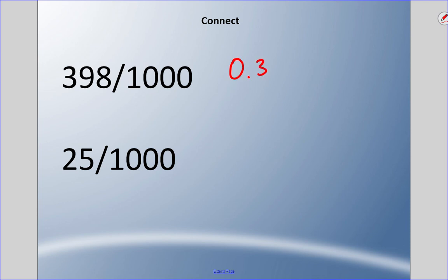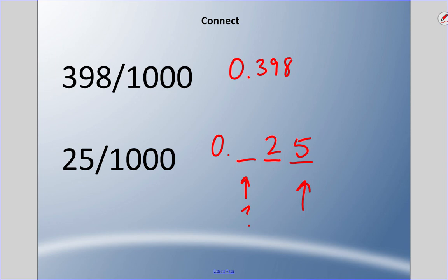The second fraction is 25 over 1000. The five must land on the thousandths place, so put three digit spaces after the decimal — the two goes in the hundredths place and we need a zero in the tenths place. We write 0.025, and we say 25 thousandths, because that five lands on the thousandths spot.